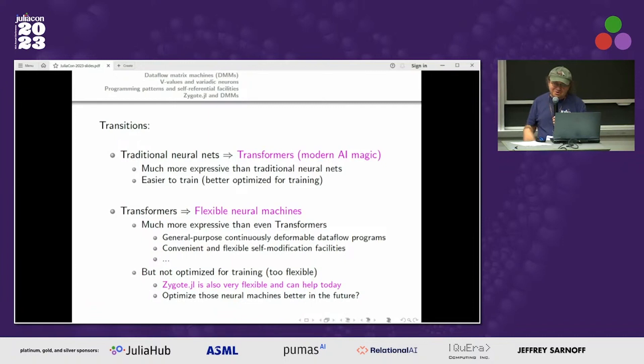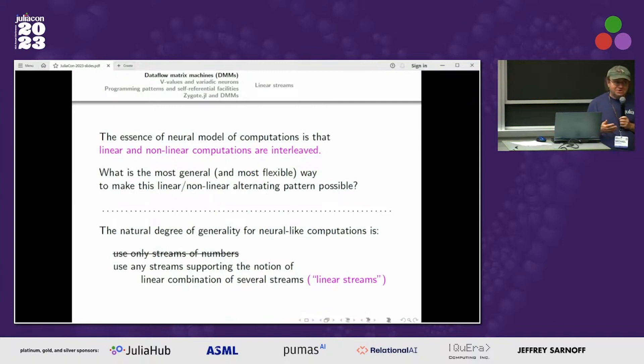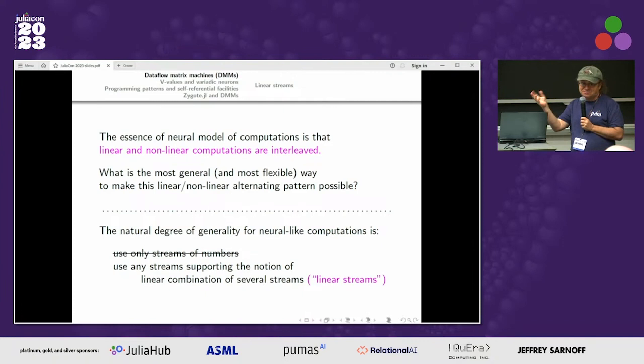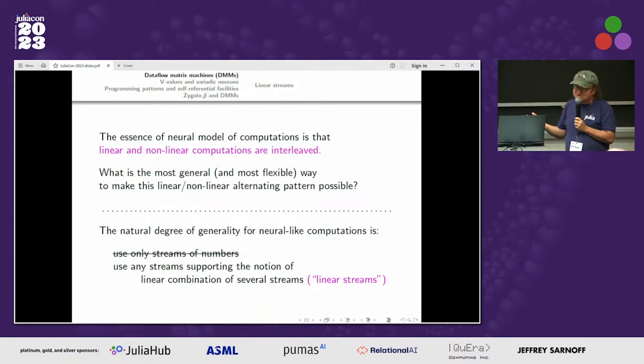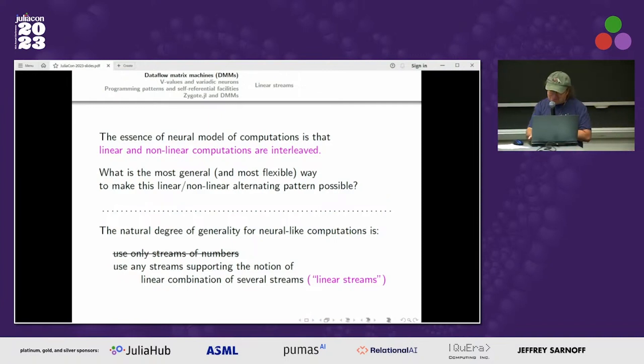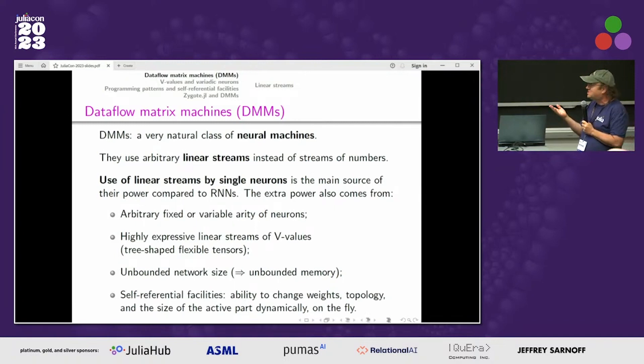If you think about neural computations, the essence is that you interleave linear and nonlinear computations — you just need an alternating pattern like this. So what's the natural degree of generality? It's not streams of numbers; it's any streams, as long as you can combine them with coefficients. That's what one should aim for, and so you get this very natural class of neural machines which use single neurons.